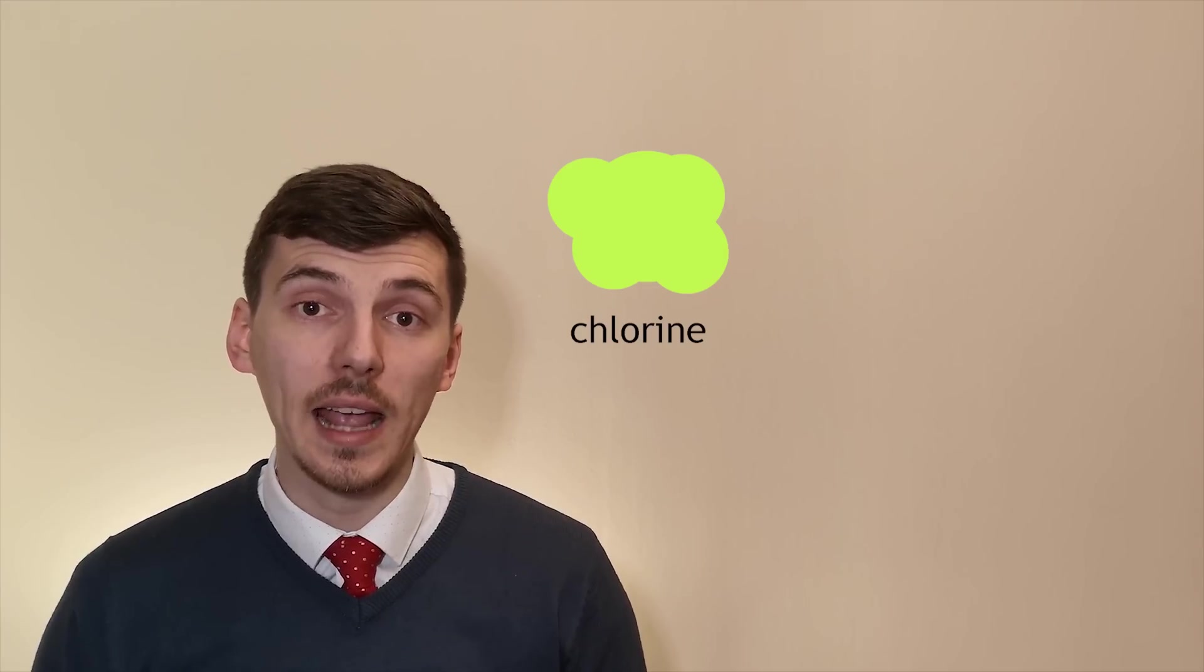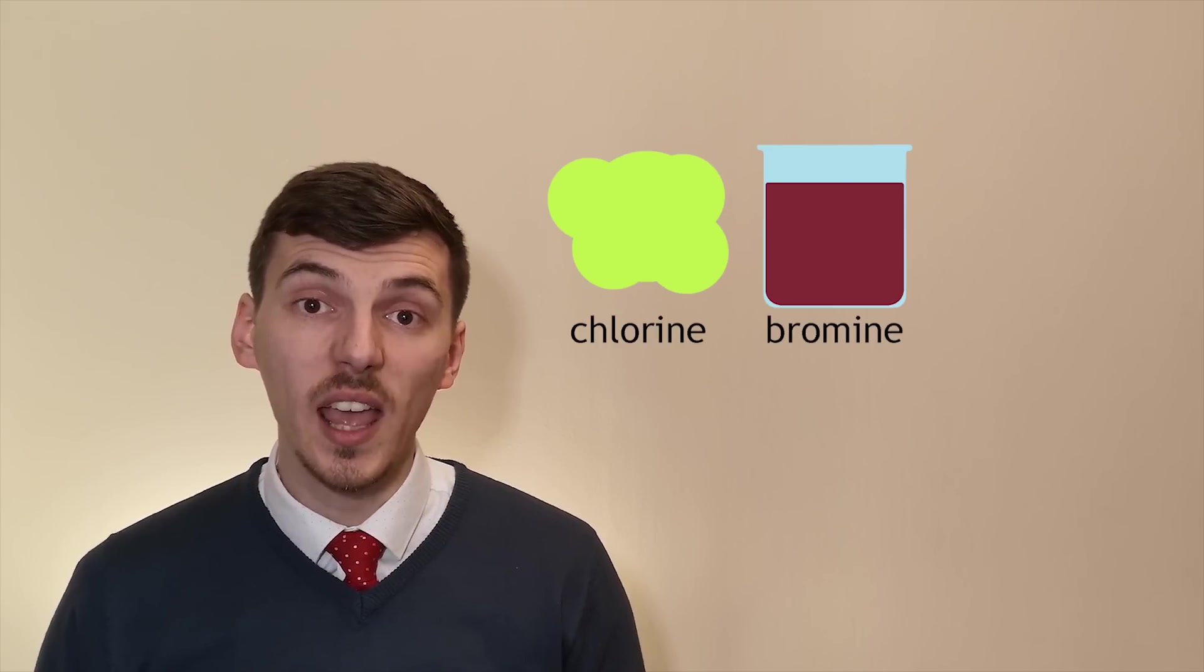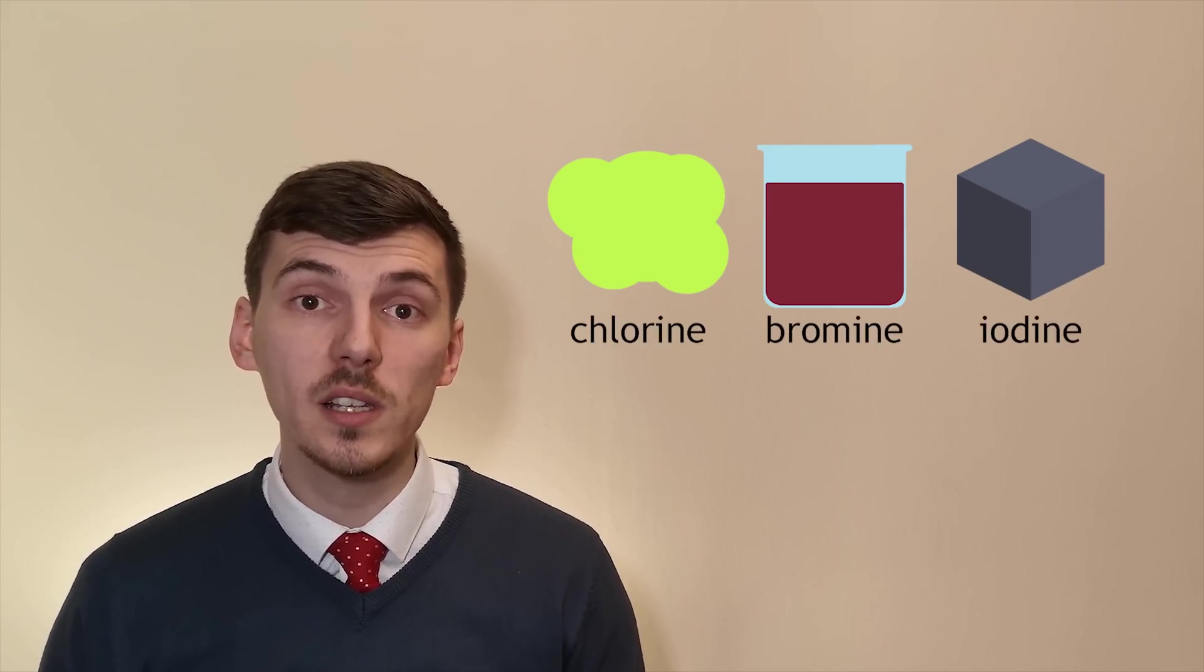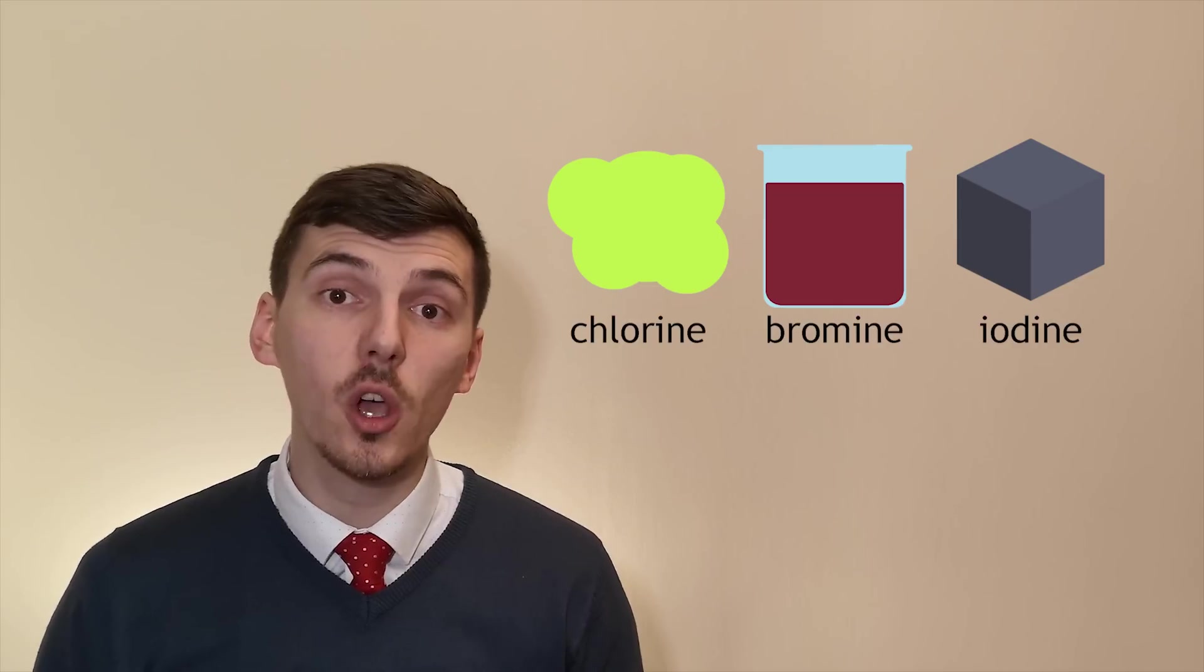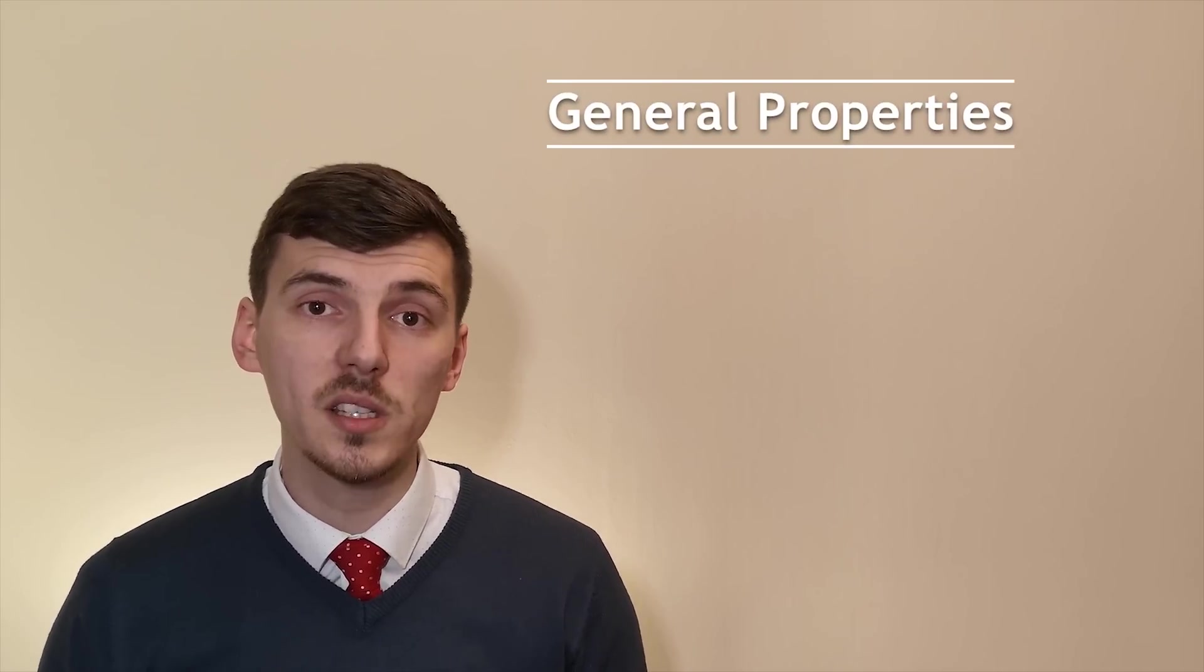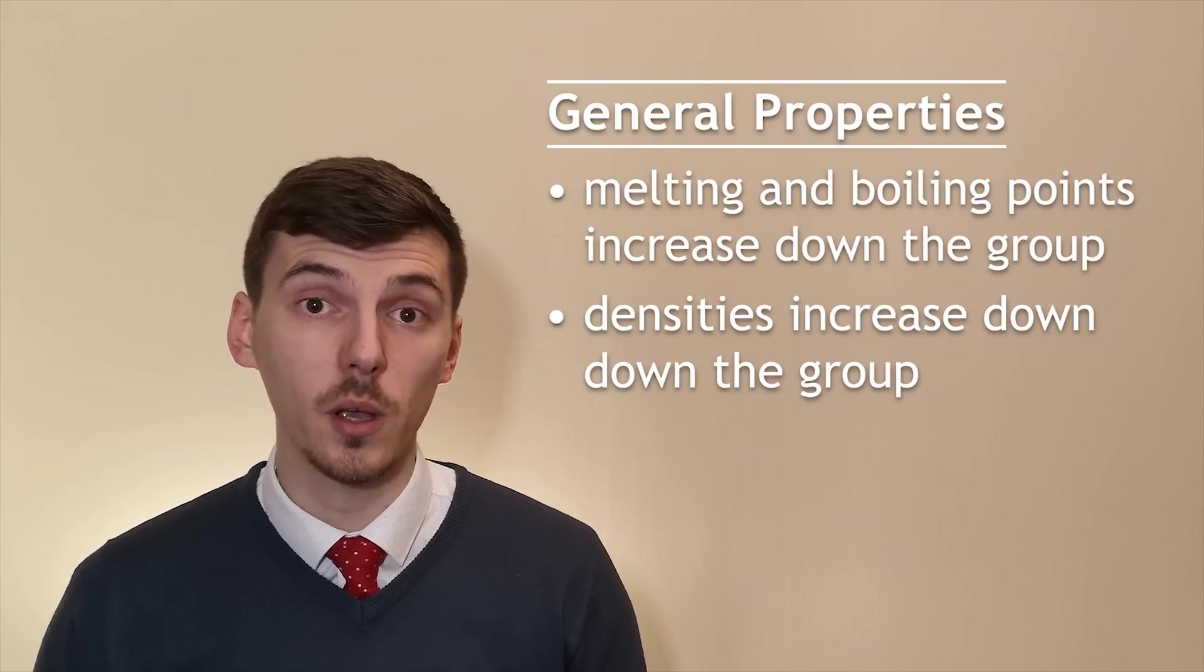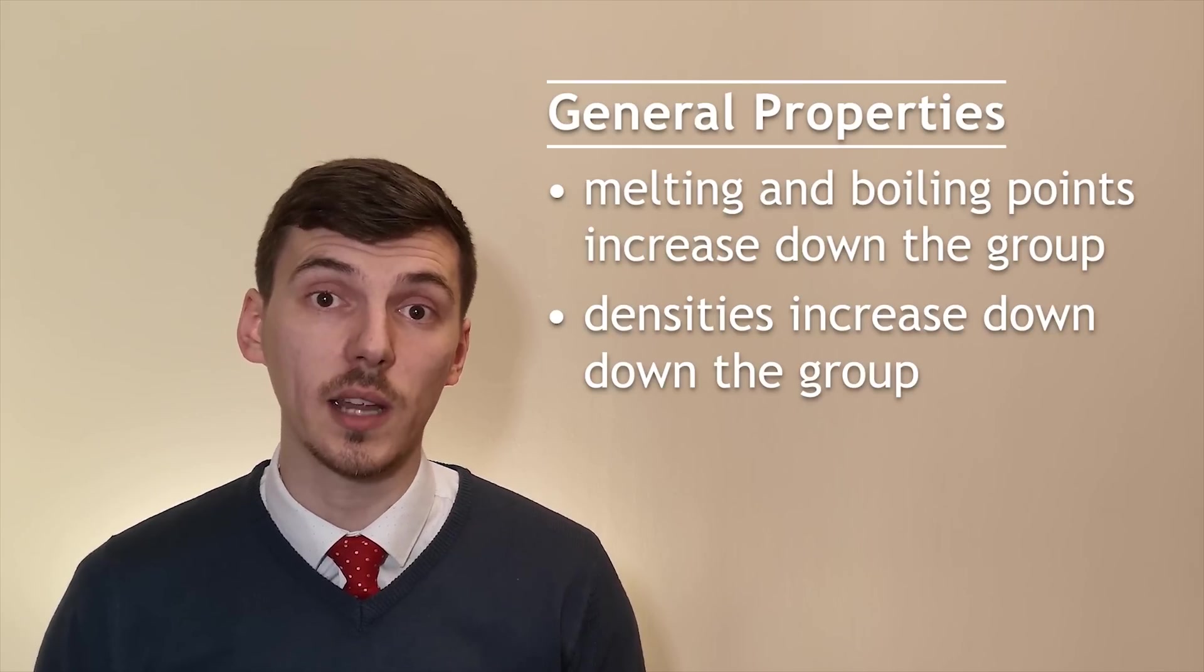Chlorine is a green gas whilst bromine is a reddish brown liquid. If we move down to iodine we notice that that is actually a grey solid but it will sublime to make a purple gas when heated. We notice that the melting and boiling points increase as we go down the group. We also notice the densities increase as we go down the group as well.